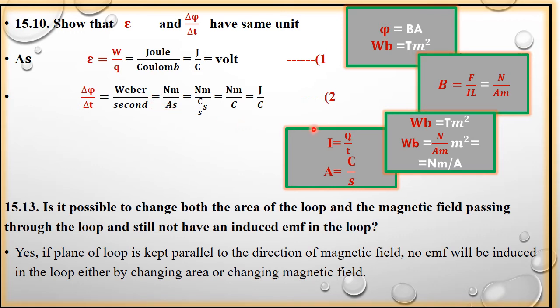Ampere hai current ka unit. Current kis ke equal hota hai? Q by T. Yahaan, charges ka flow with respect to time current produce karta hai. Charges ko measure karte hain coulomb mein. Time ko second mein. Iske ki jagah aap likhenge coulomb by second. Second second se cancel ho gaya. This is equal to Newton meter per coulomb. Aur Newton meter kis ke unit hain? Work ka. Joule. So, iske ki jagah aap likhenge Joule. Joule per coulomb. So, iske ki jagah volt ke equal hai. So, equation one aur two ka comparison kar ke aap keh sakte hain ke EMF and rate of change of flux in dono ke units kya hain? Same hain.